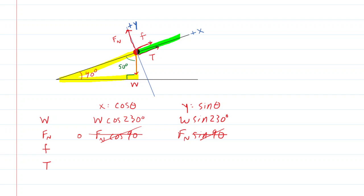We next look at the frictional force. Because it sits right on the x-axis, the angle is 0 degrees. The frictional force times cosine of 0 gives F times 1, which is just F. The sine of 0 is 0, so that component goes away. The same holds for the tension force — it has the same angle of 0 degrees, so we end up with T times 1 and T times 0. So there is our complete force table.